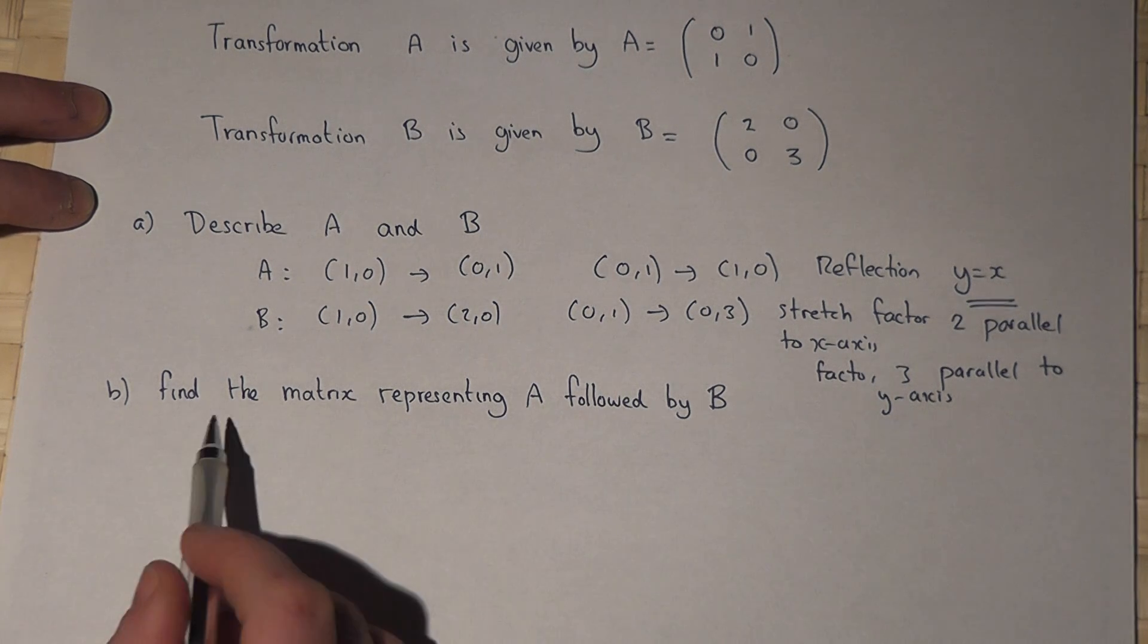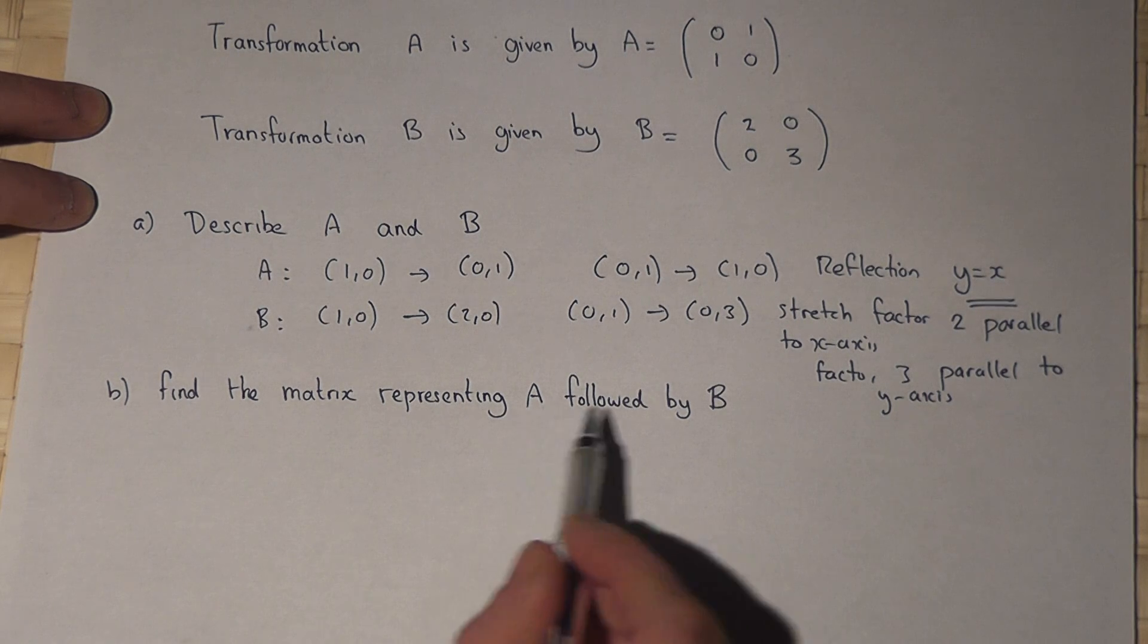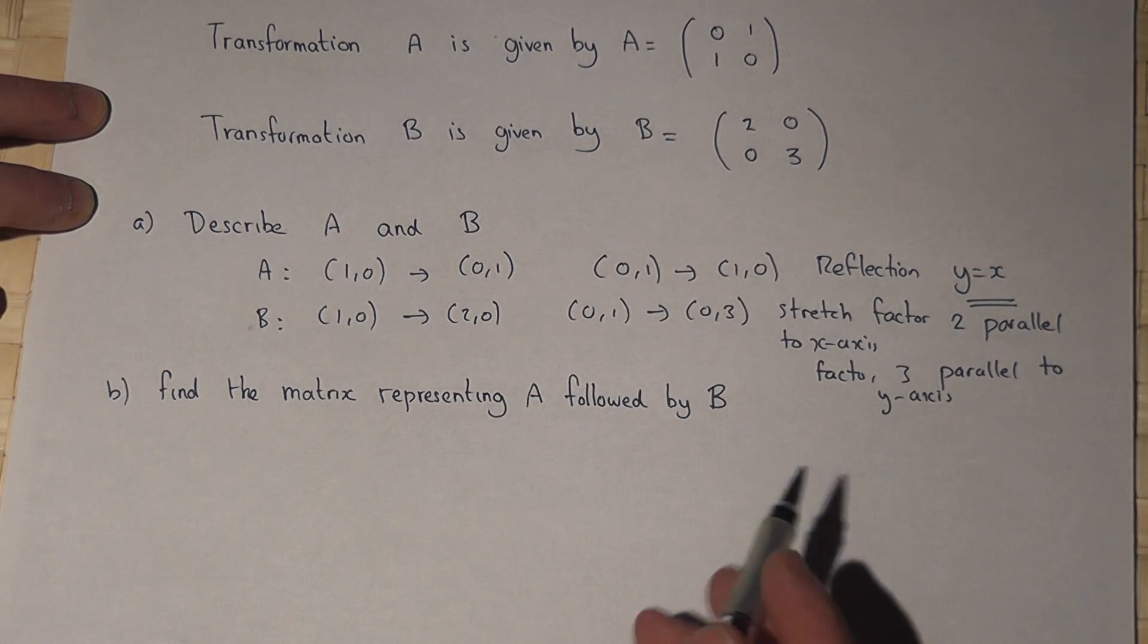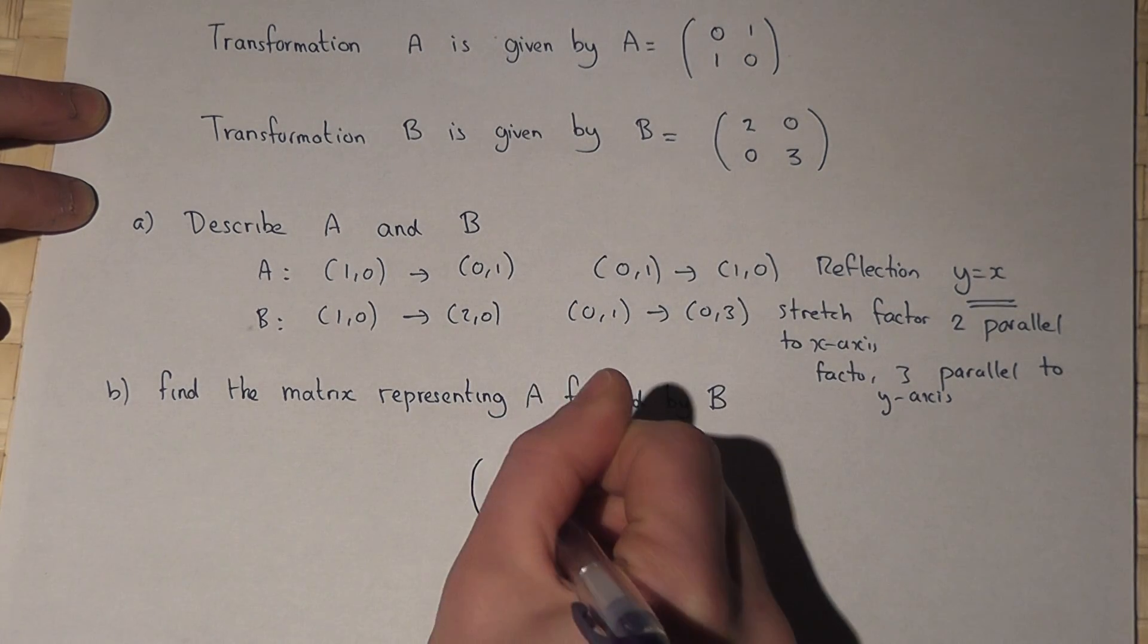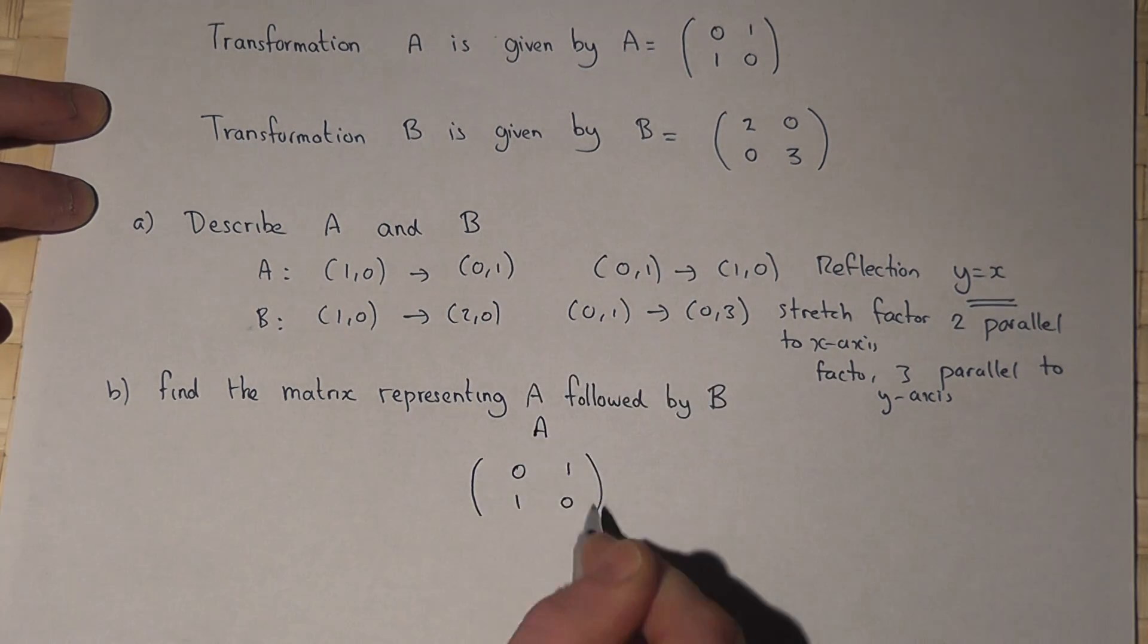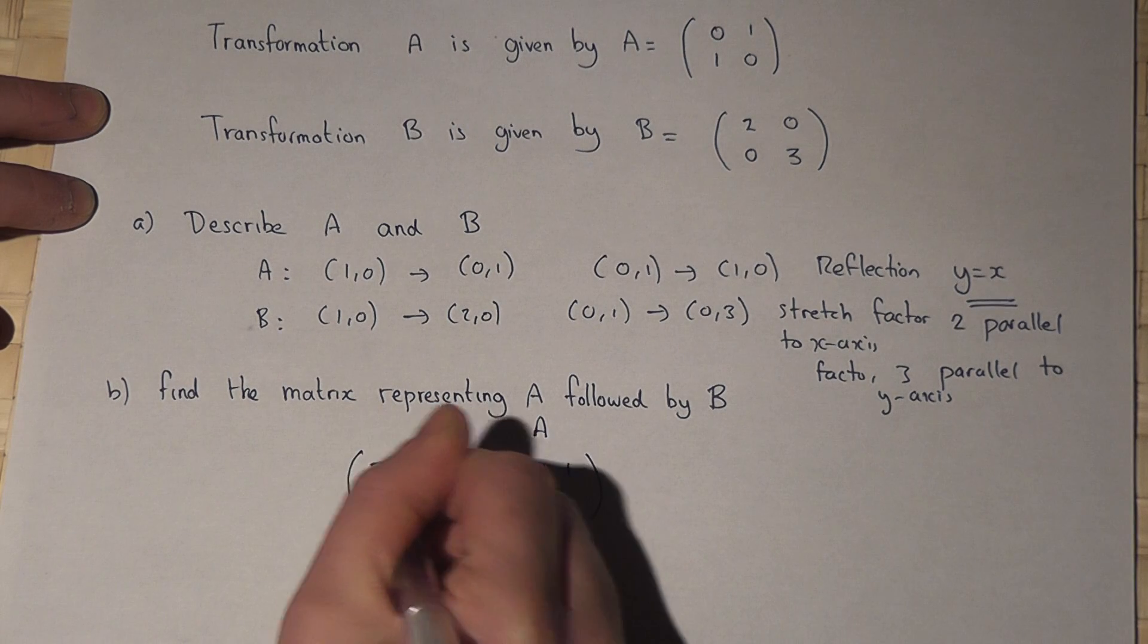In part B we're asked to find the matrix which represents A followed by B. To work this out we times together A and B in a certain order. We write down A first, then after A comes B and we write down B to the left hand side.